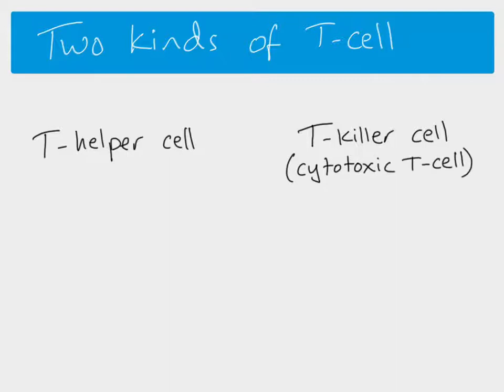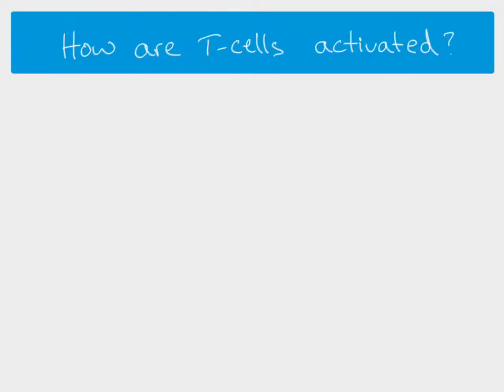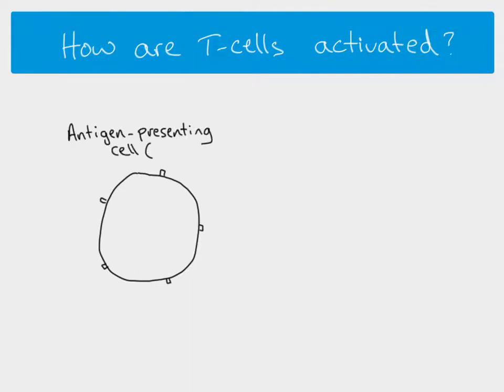T killer cells are also known as cytotoxic T cells. For these T cells to work, they need to be activated, and they are activated by something called an antigen presenting cell. Until they're activated by an antigen presenting cell, they aren't able to function and can't do their job. Let's have a brief look at how T cells are activated.